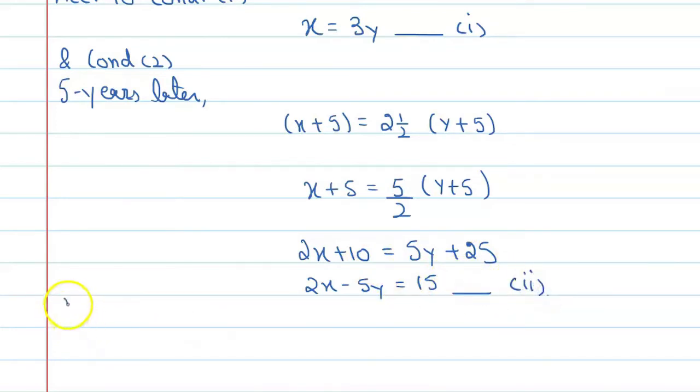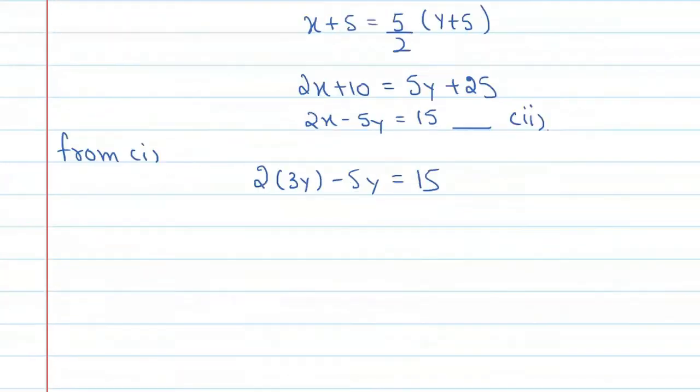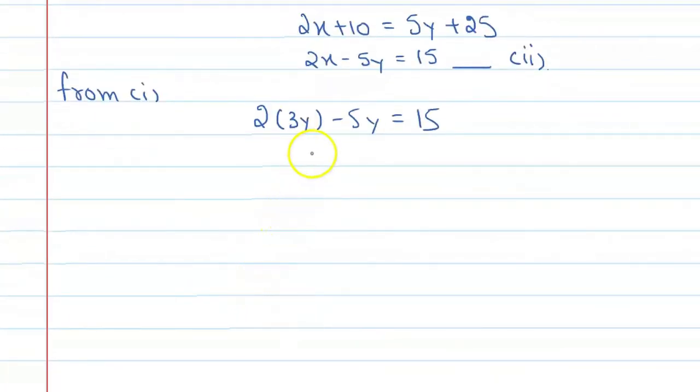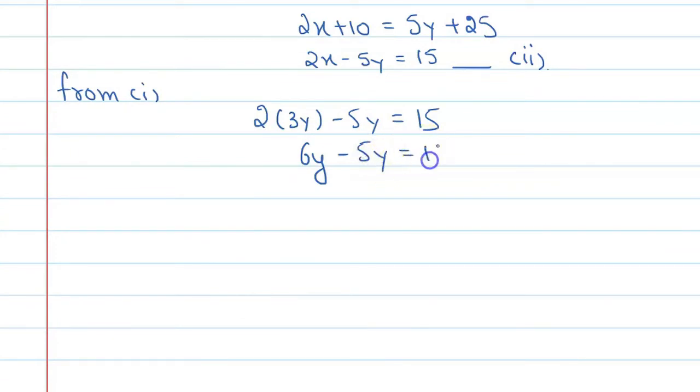So from equation 1, put the value of x in equation 2. Then you will get 2 into 3y minus 5y equal to 15. So from here you will get y is equal to 15.